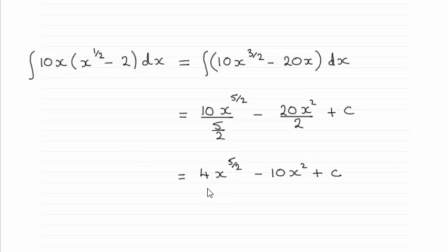And as you can see, we've got it here as 4x to the power 5 over 2 minus 10x squared plus a constant of integration which I've called c.